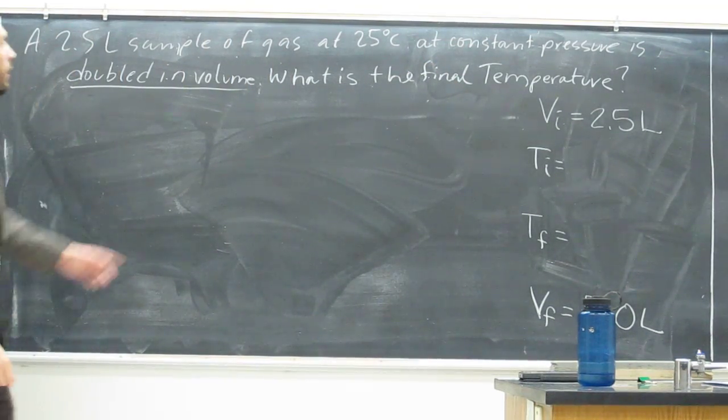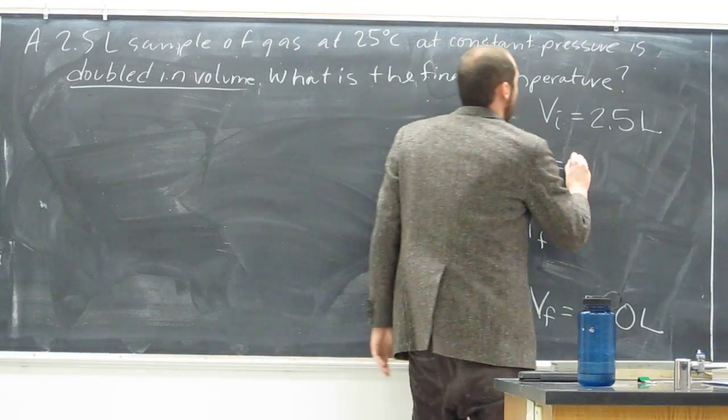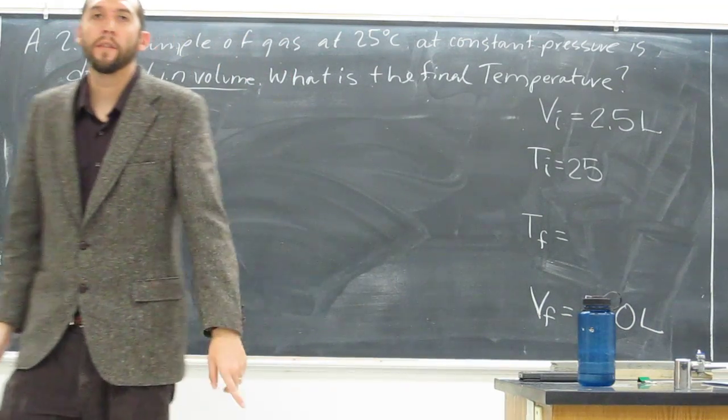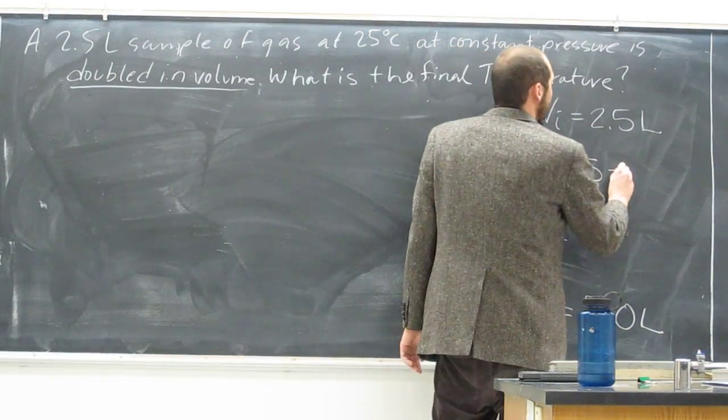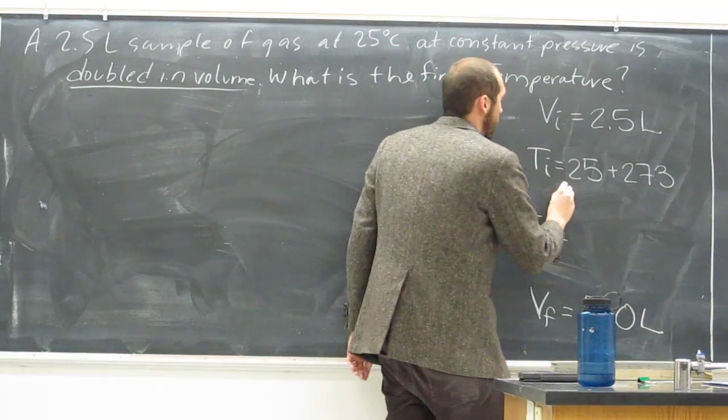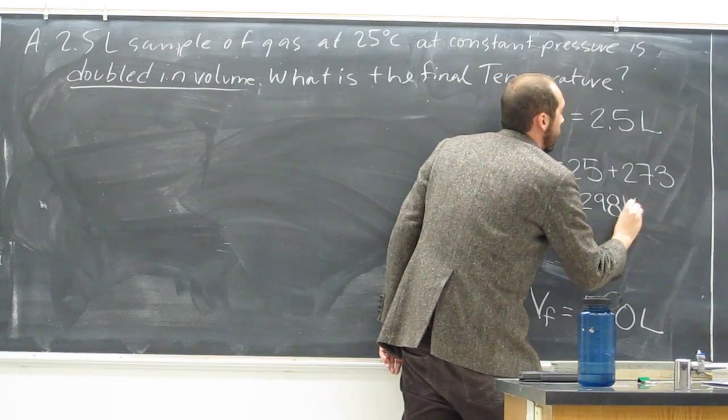The initial temperature we also know, 25 degrees Celsius. But remember, we have to use Kelvin, the Kelvin temperature scale for this, so we're going to have to add 273 to that. So that's going to equal 298 Kelvin.